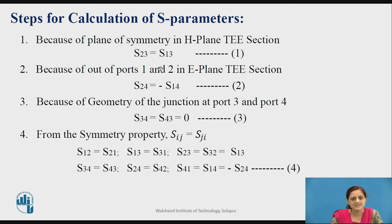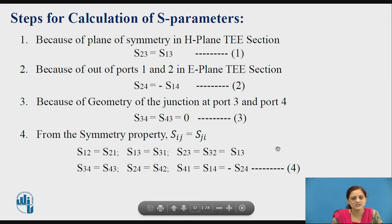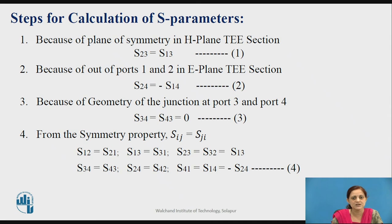Now consider the symmetry property: Sij equals Sji. By using this property, you can write S12 equal to S21, S13 equal to S31, S23 equal to S32. From the earlier equation, S23 equals S13, therefore S23 equal to S32 equal to S13. Similarly, S34 equal to S43, S24 equal to S42, and S41 equal to S14, which is equal to minus S24 from equation 2.